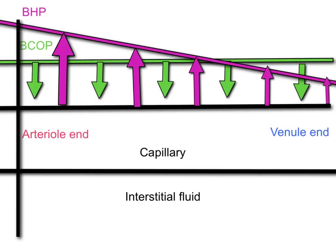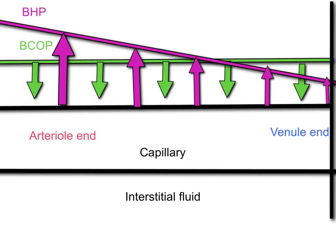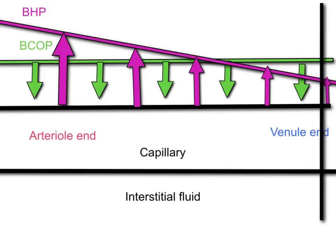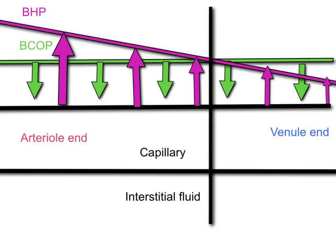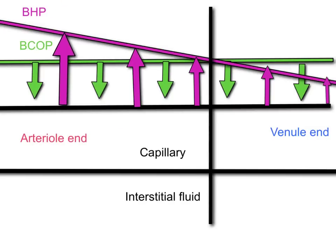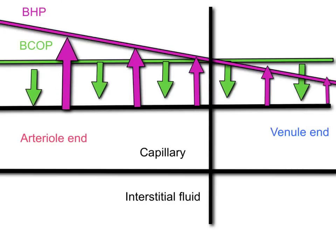What we now want to look at is where these two lines intersect. We will see that the intersection occurs approximately there. At the arterial end, you can now see that the blood hydrostatic pressure is greater than the blood colloid osmotic pressure, so the outward force is greater than the inward force.